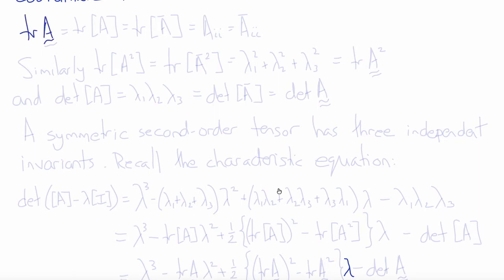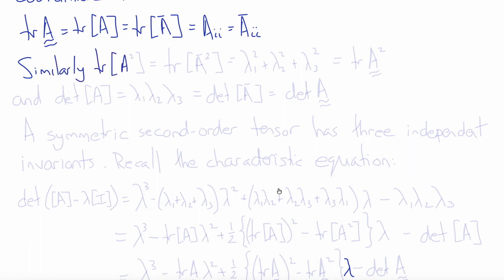The trace is therefore not only a property of the matrix but really a property of the tensor. We can write the trace of A — which is a scalar — as the trace of the matrix A, or the trace of the matrix A bar, or A_II, or A_II bar. Similarly, we could prove the same thing for the trace of A squared, or the trace of A raised to any power. So the trace of A squared would also equal the trace of A bar squared, which would also equal lambda 1 squared plus lambda 2 squared plus lambda 3 squared — again a property of the tensor.